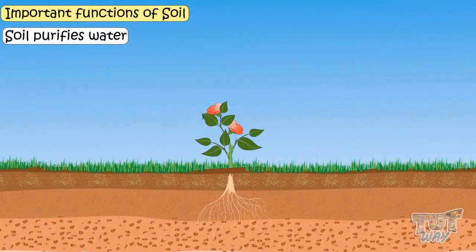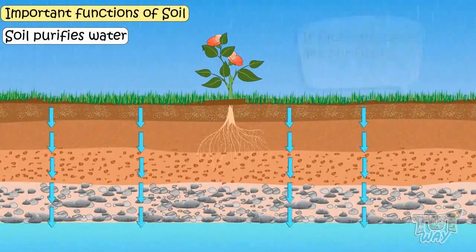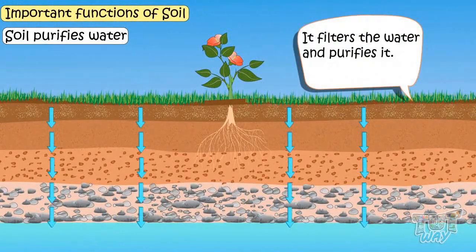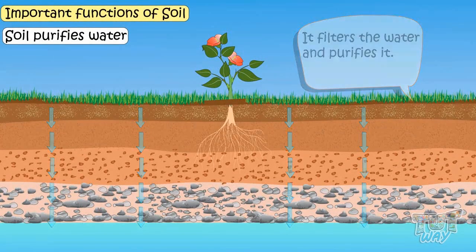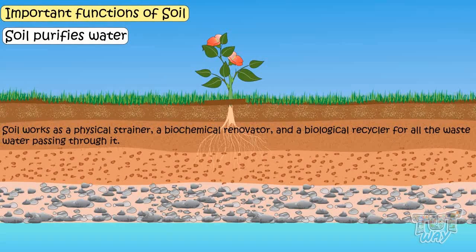Soil purifies water. When rainwater passes through the different layers of soil, it filters out the water and purifies it. Soil works as a physical strainer, a biochemical renovator, and a biological recycler for all waste water passing through it.